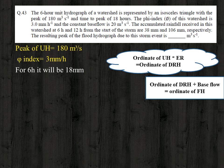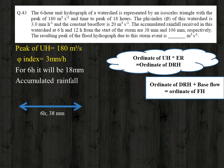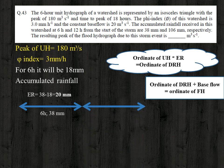For the first six hours, the accumulated rainfall is 38 mm. The effective rainfall equals accumulated rainfall minus phi index loss: 38 − 18 = 20 mm for the first six-hour period.